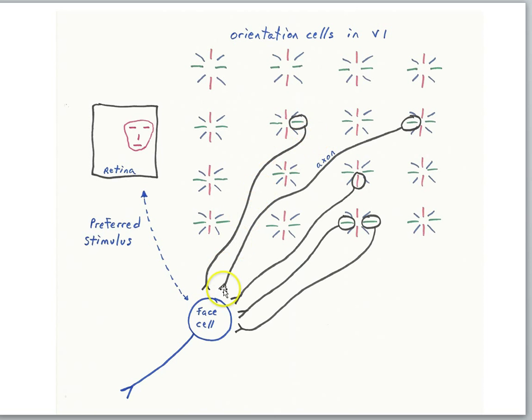And perhaps a different face, the relevant axons would all converge on a different cell. And so that other cell would come to represent the presence of a different face on the retina.